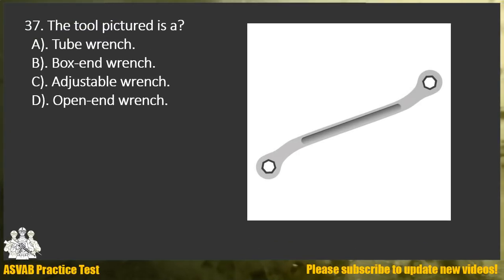Question 37. The tool pictured is: A. Tube wrench. B. Box end wrench. C. Adjustable wrench. D. Open end wrench.